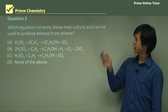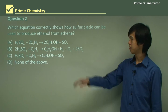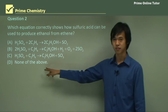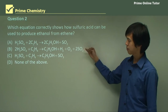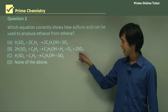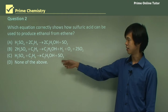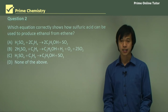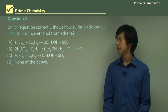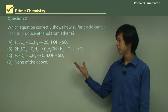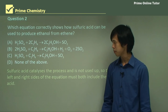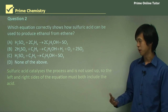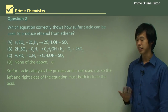Question 2: Which correctly shows how sulfuric acid produces ethanol from ethene? Looking at options A, B, and C, the sulfuric acid is consumed and you get sulfur dioxide and sulfur trioxide — but sulfuric acid is just the catalyst. A catalyst can't be consumed in the reaction, so A, B, and C are all wrong. Because none of them show sulfuric acid on both sides of the equation, the answer is D.